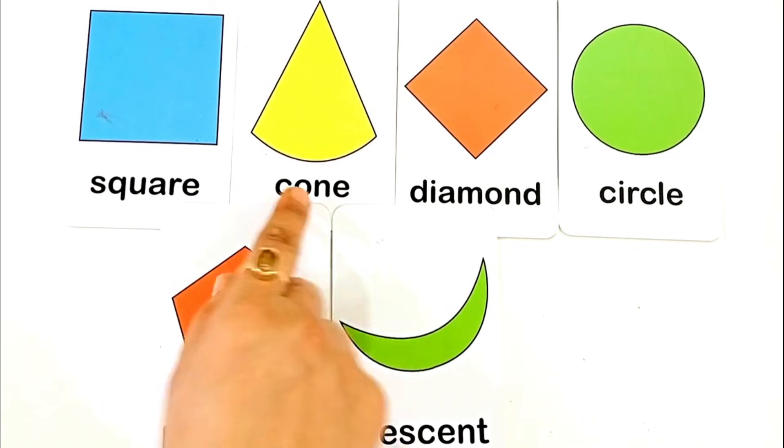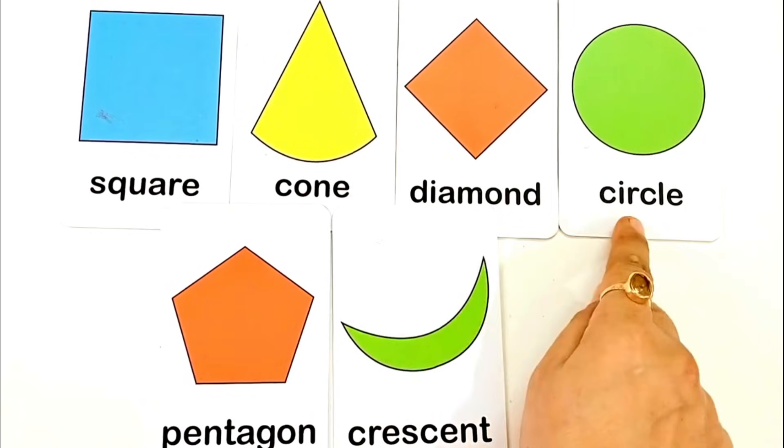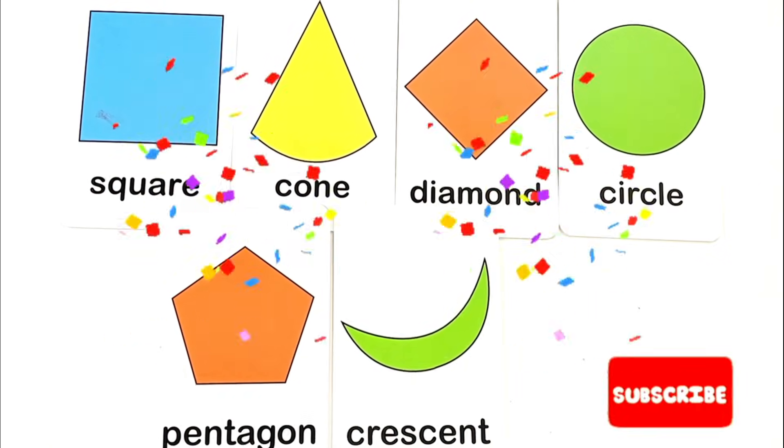And the shapes are: square shape, cone shape, diamond shape, circle shape, pentagon shape, crescent shape.